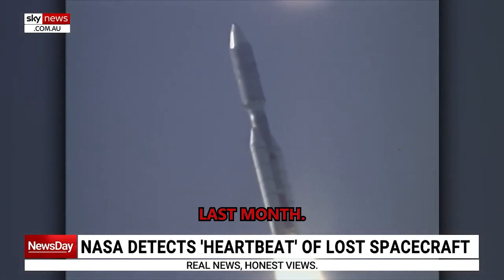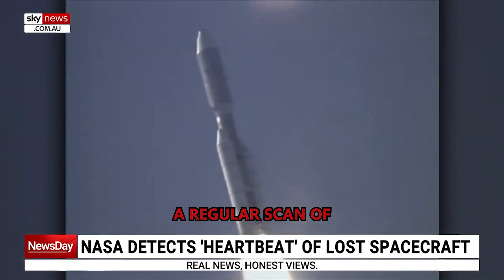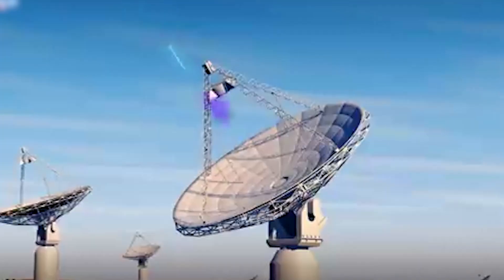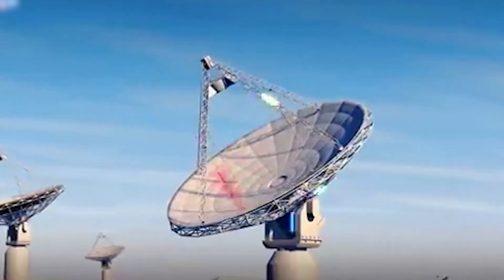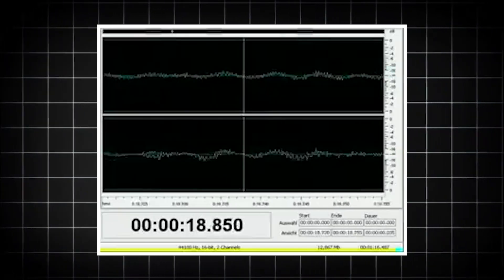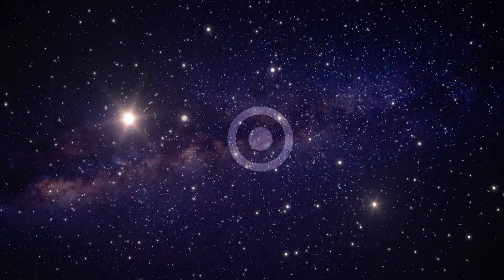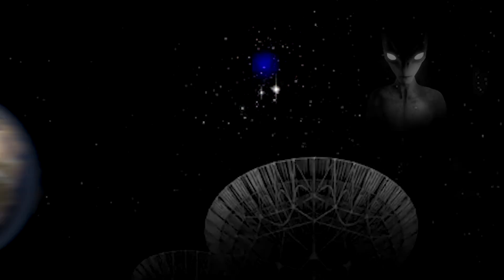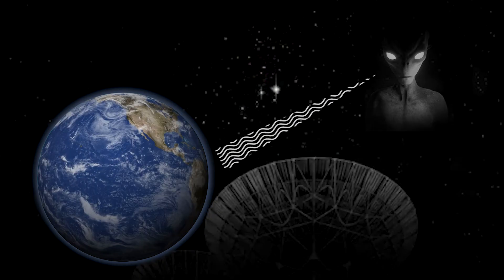NASA lost contact with its Voyager 2 probe last month, but a heartbeat signal from the craft has been picked up during a regular scan of the sky overnight. Bursts of energy that follow a pattern. These aren't random, they're signs. Something is out there, and it's been trying to make contact for a very, very long time.